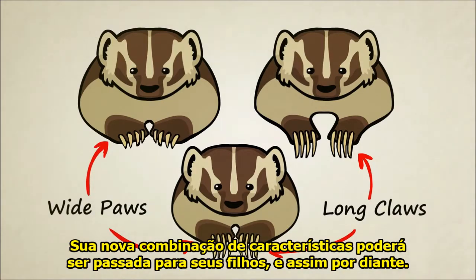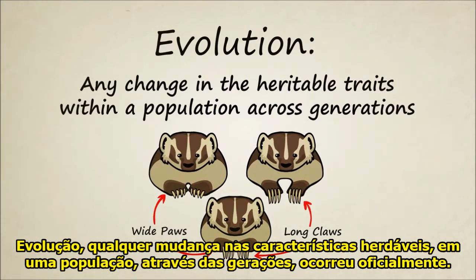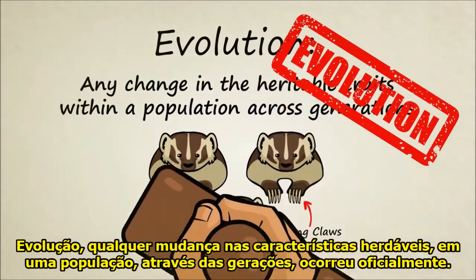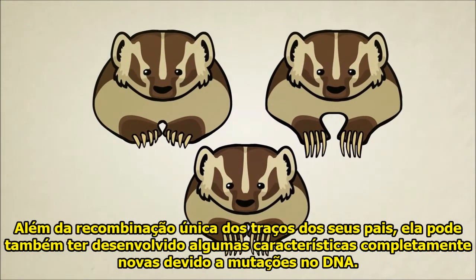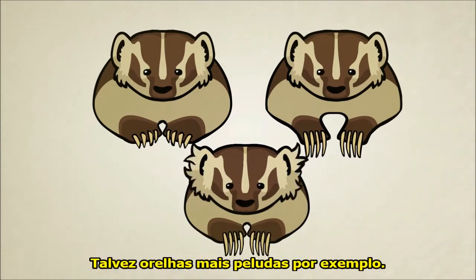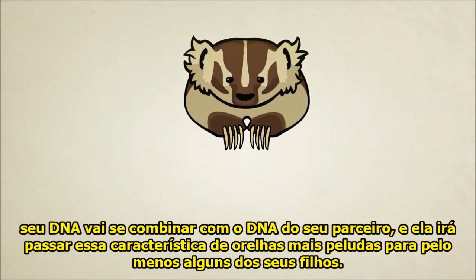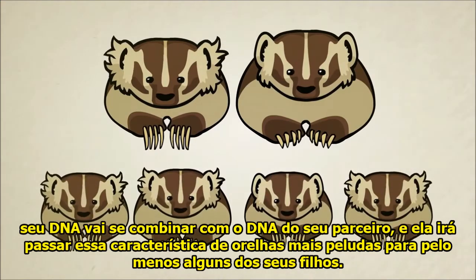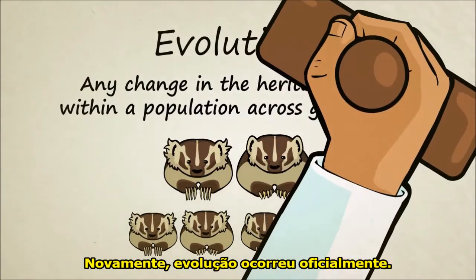Her new combination of traits can be passed on to her children and, again, evolution — any change in the heritable traits within a population across generations — has officially occurred. Besides a unique recombination of her parents' traits, she might also have developed some completely new traits of her own due to DNA mutations. Maybe extra hairy ears, for example. If she survives long enough to have kids, her DNA will combine with the DNA of her partner and she'll pass on those extra hairy ears to at least some of her children. Again, evolution has officially occurred.